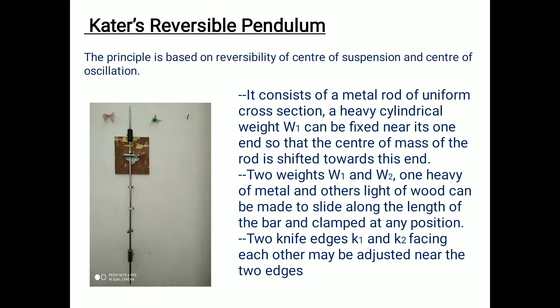There are two cylinders — one made of metal and one made of wood. The metallic cylinder is denoted as W1 and the wooden cylinder as W2. There are also two knife edges, K1 and K2, shown in the picture as black-colored knife edges. These are facing each other and may be adjusted near the edges and fixed at the ends of the metallic rod.